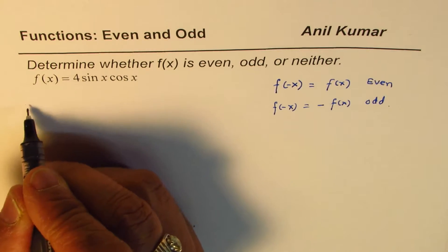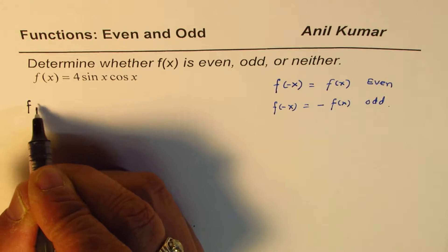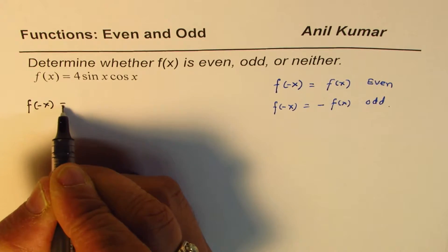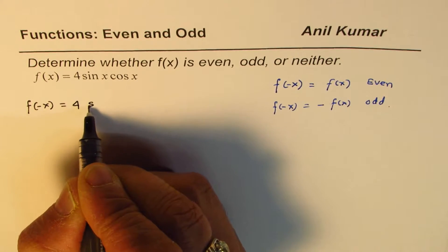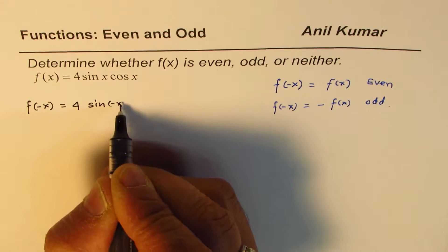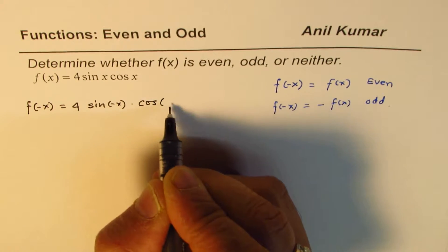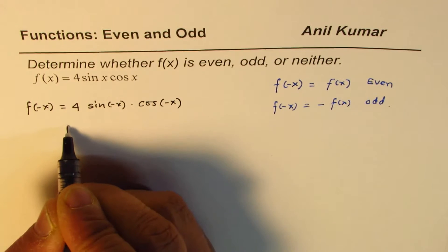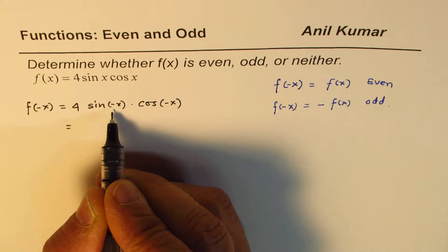If I replace x with -x, I get f(-x) equals 4sin(-x)cos(-x). Now, sine is an odd function, so sin(-x) is -sin(x).